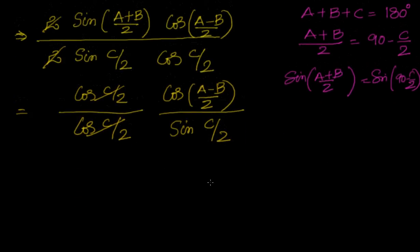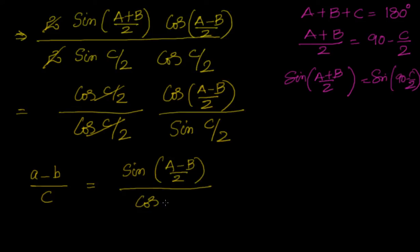Now, in the same lines, can you go ahead and check that (a-b)/c equals sin((A-B)/2) divided by cos(C/2). You can see that (a+b)/c is cos by sin. The angle will be the same, but sin and cos will switch each other when you go from a plus b to a minus b.